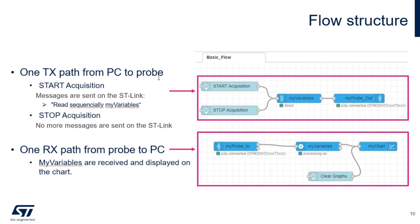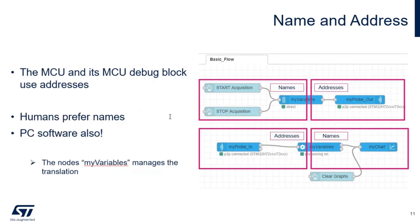Each time on the transmission path, we click the start button and send messages to the ST-Link probe sequentially, asking it to read the values of the variables defined in the variable node. In the other direction, we receive the variables from the ST-Link and display them on a chart. The MCU and MCU debug block use addresses, while the PC software uses names. The variable nodes — both of them — make the translation from names to addresses and from addresses to names, so those two nodes hold all the information about the variables.